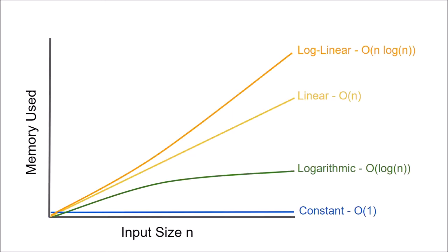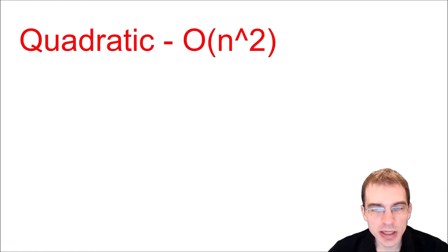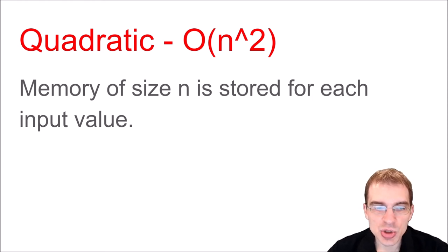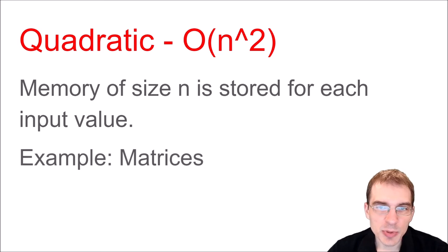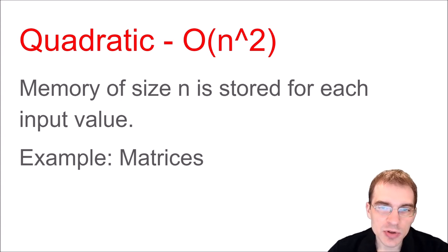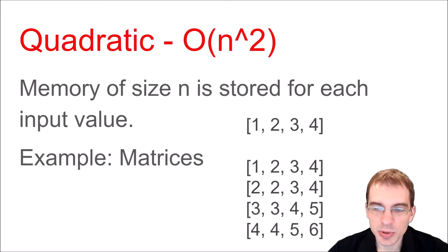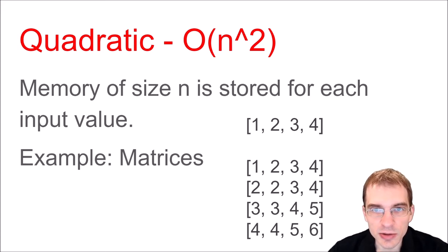After log linear space complexity, things are starting to get pretty bad. The next class is quadratic space complexity. A function with quadratic space complexity is one where an amount of memory of size n has to be stored for each member of the input array of size n — so you're storing something of length n, n times. Examples where this might happen are matrices, which are two-dimensional data structures. If you're given an input list and your algorithm has to construct a matrix out of that list, that could result in quadratic memory usage. For instance, with an input array of 1, 2, 3, 4 that creates a 4×4 matrix, you end up with 16 values stored — n squared.